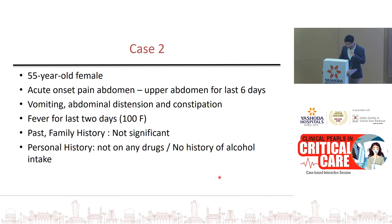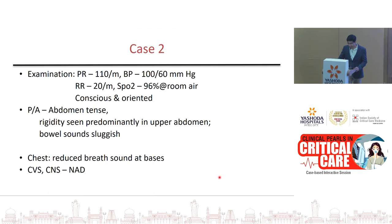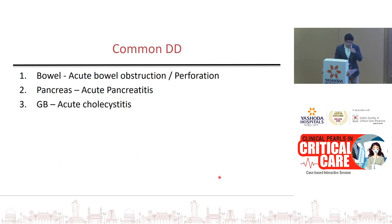Moving on to Case 2: a 55-year-old female who presented with acute-onset upper abdominal pain, vomiting, abdominal distension, constipation, and fever of 100°F for the last two days. On examination she has tachycardia and a tense abdomen with rigidity in the upper abdomen. Common differentials at this point would be acute bowel obstruction, acute pancreatitis, or acute cholecystitis.